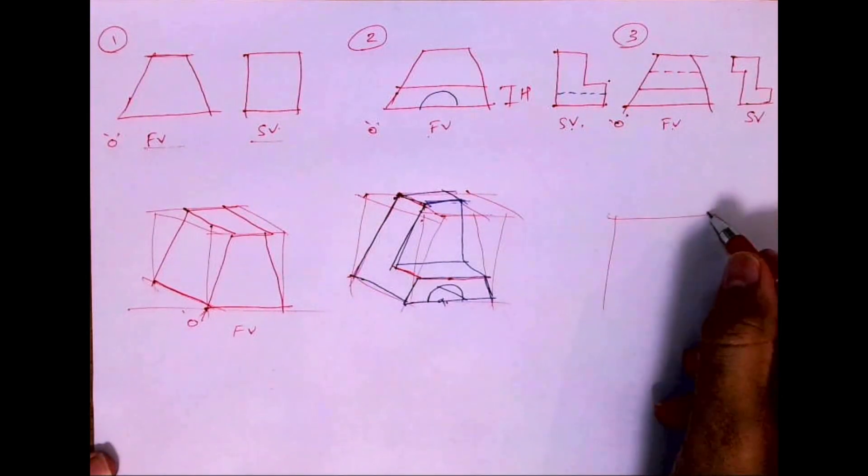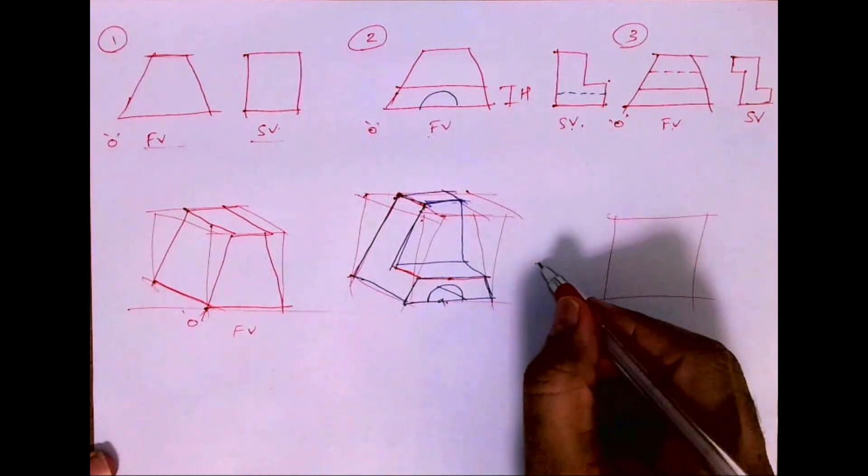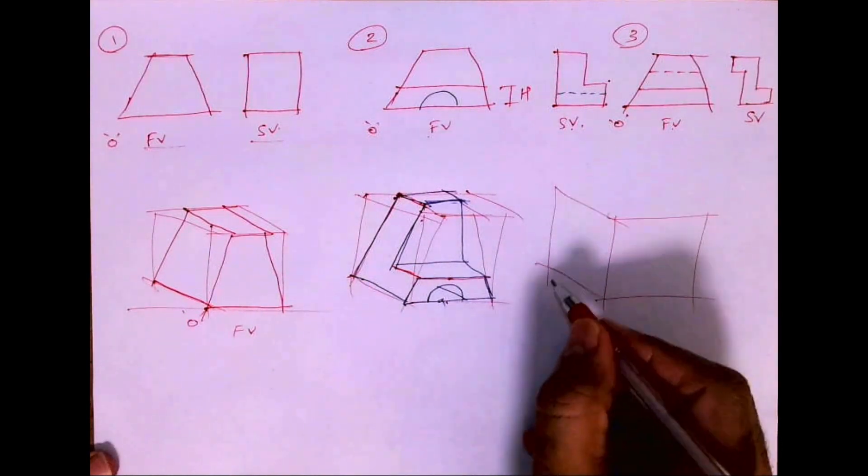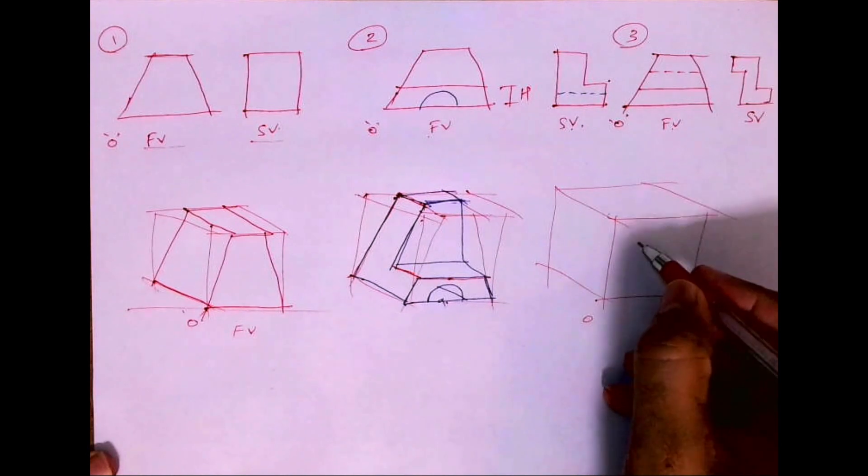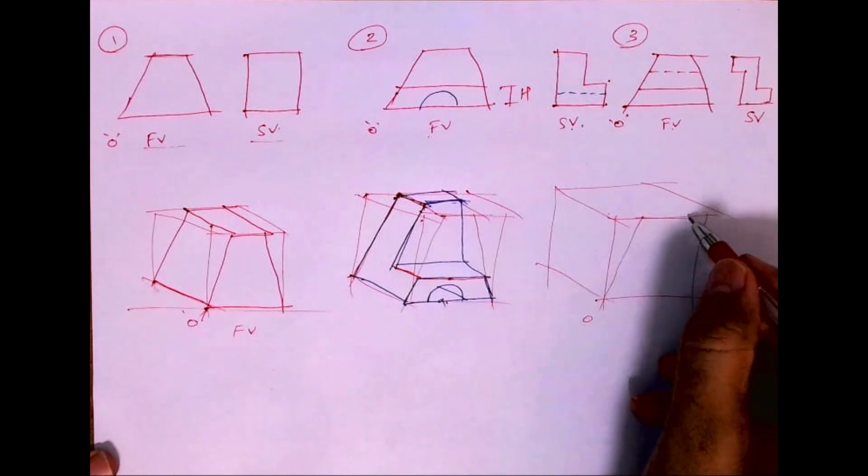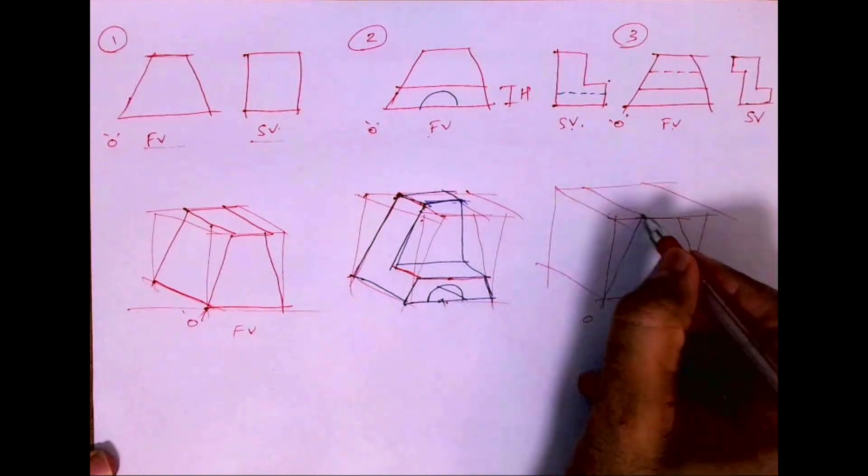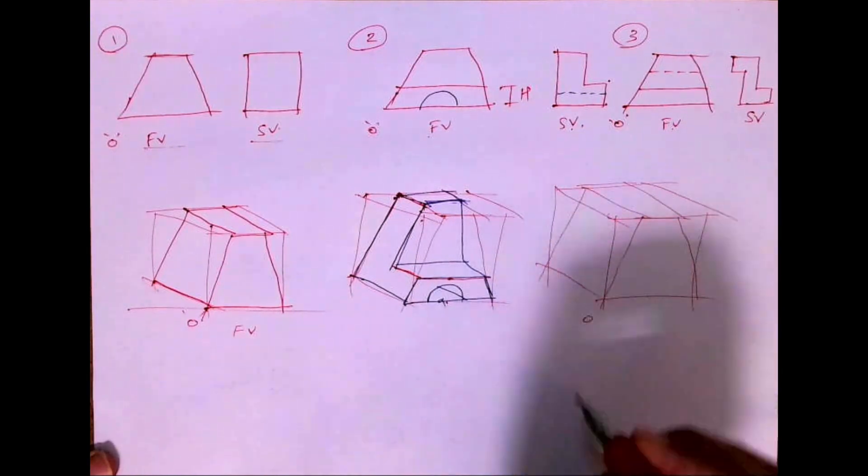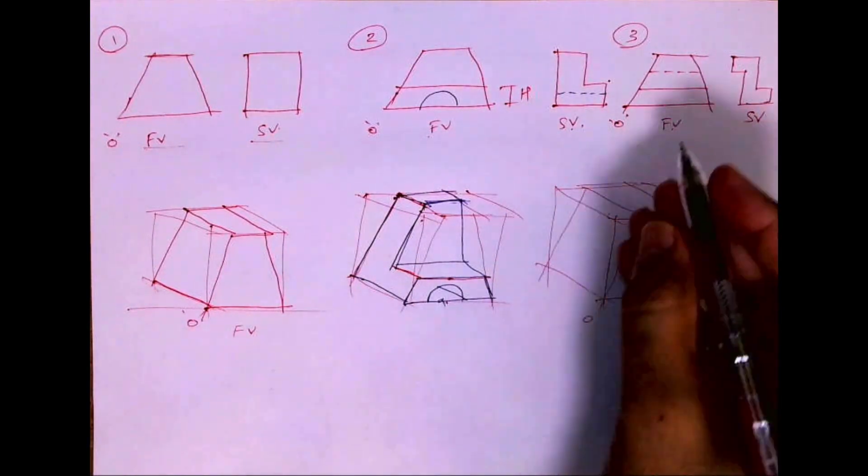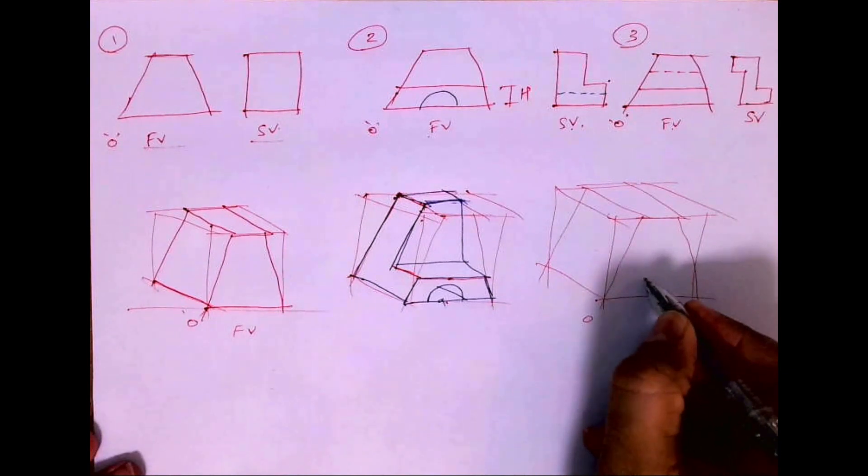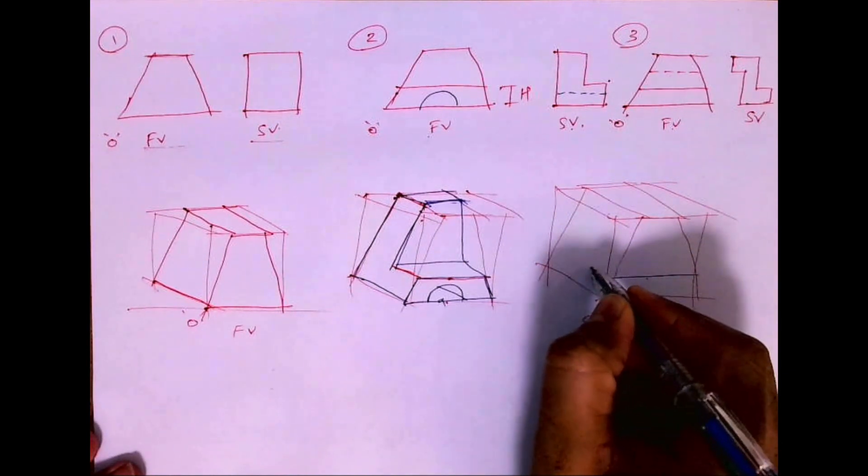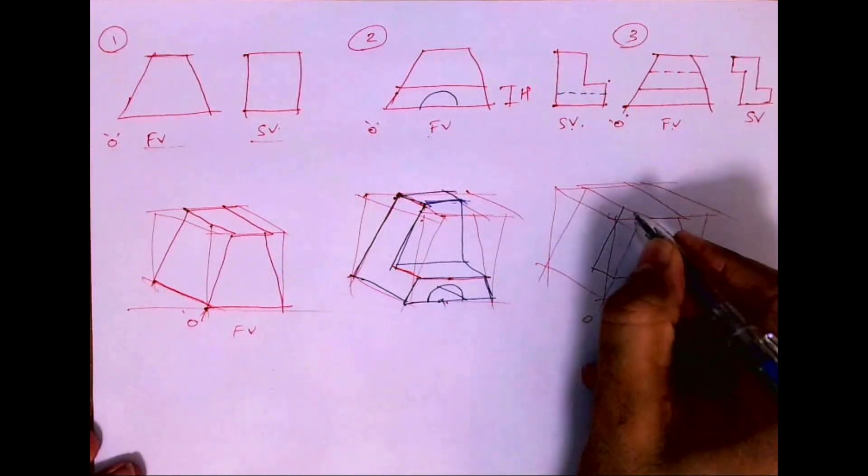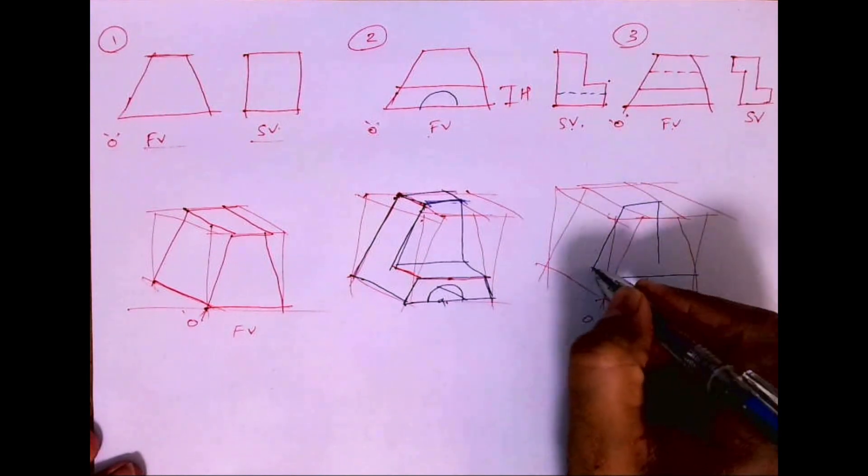For the third one, again I will draw a box, then I will draw a slope. After drawing the slope, you will take the height, draw a horizontal line, go inside. This is how you draw.